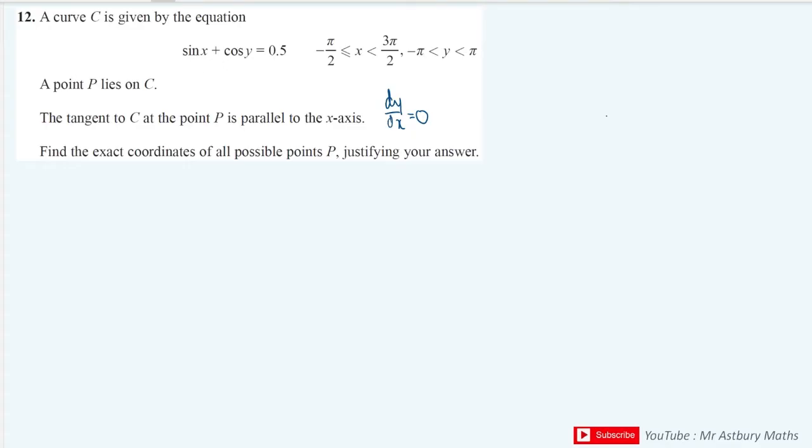So first step is I'm going to differentiate this function. Sine x differentiates to cos x. And if I want to differentiate cos y, I have to do that implicitly. So if I'm differentiating cos y with respect to x, that's going to be tricky because cos y is in terms of y, not x. So what I'd like to do is I'd really like to differentiate this with respect to y. That would be great. That would be much easier.